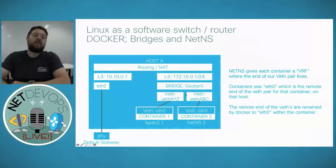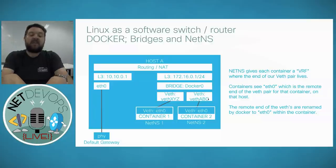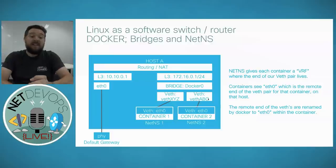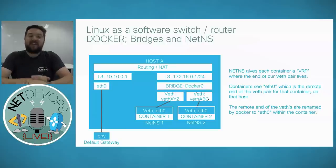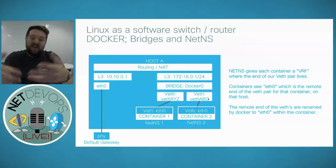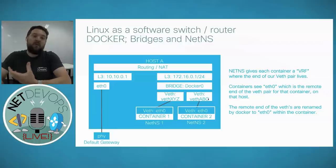To summarize: one half of the veth pair stays in the host's default network namespace, and the other is moved into the container's network namespace. That is literally all there is to it. Veths and network namespaces are the core complexity of container networking — once you understand that, pretty much everything else falls into place within your standard networking knowledge.